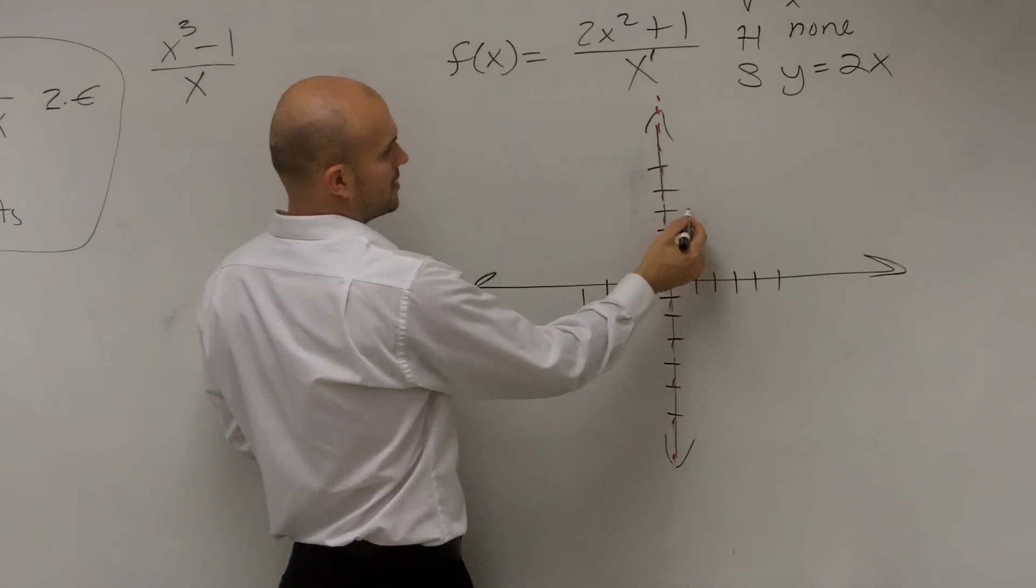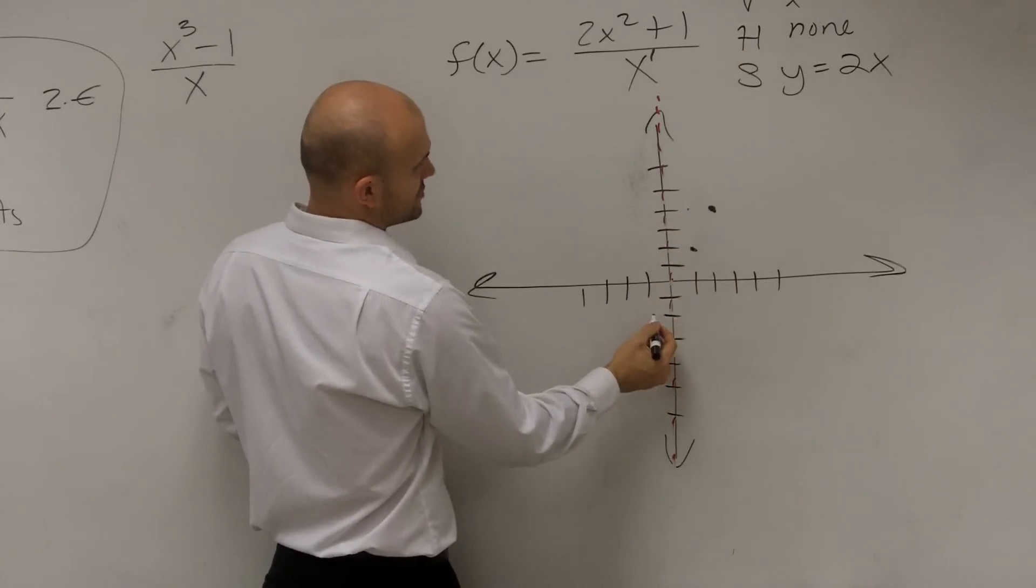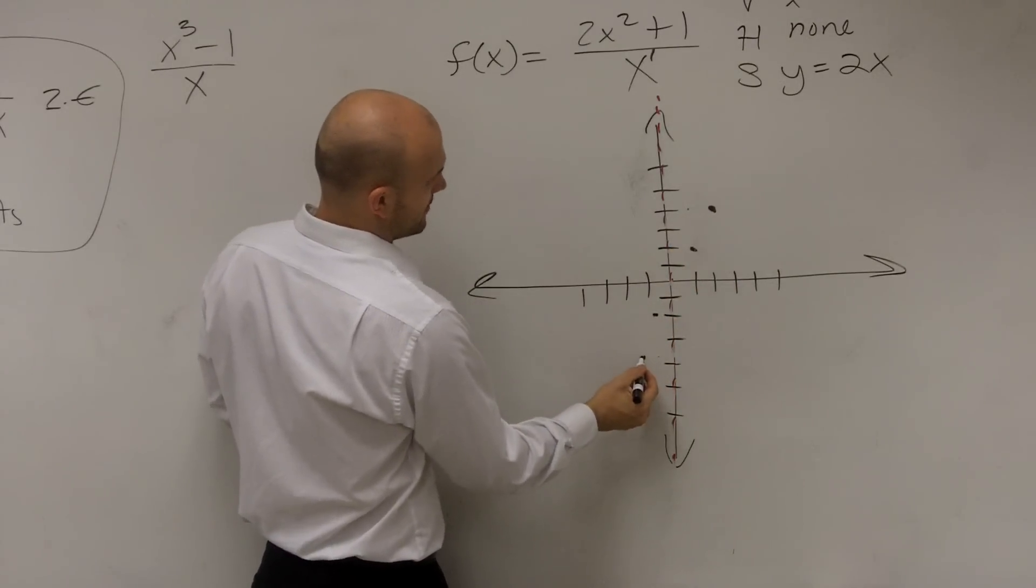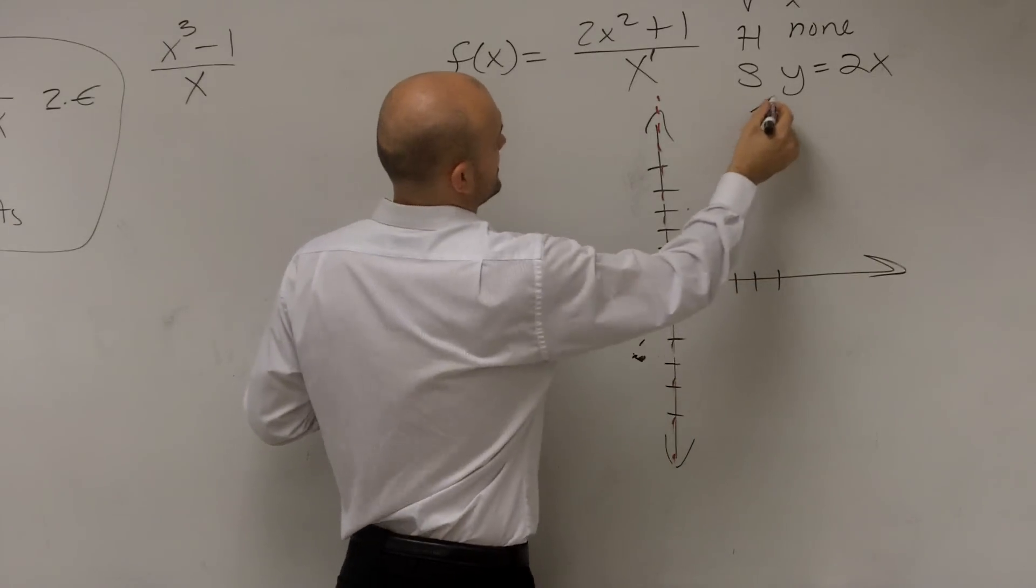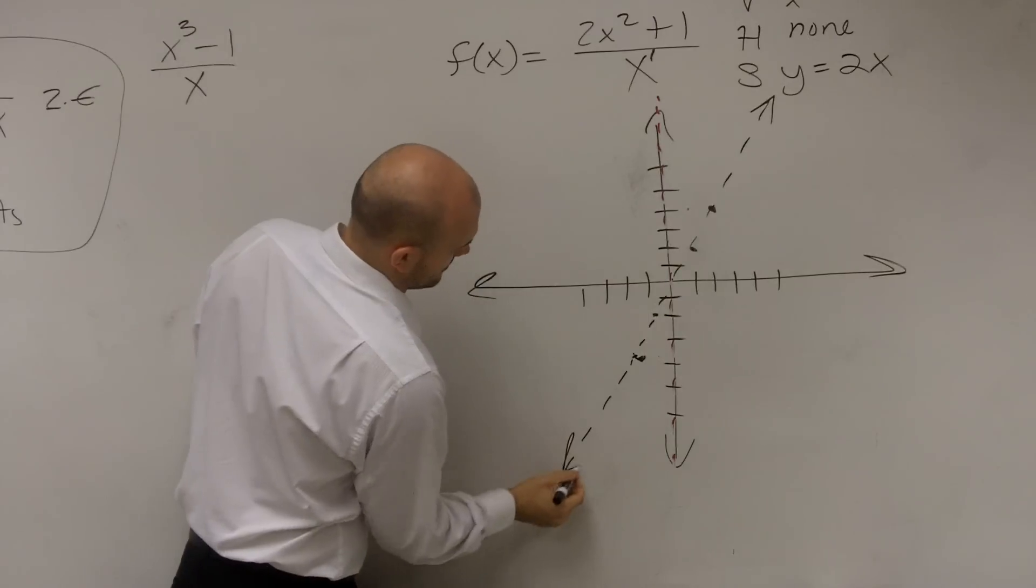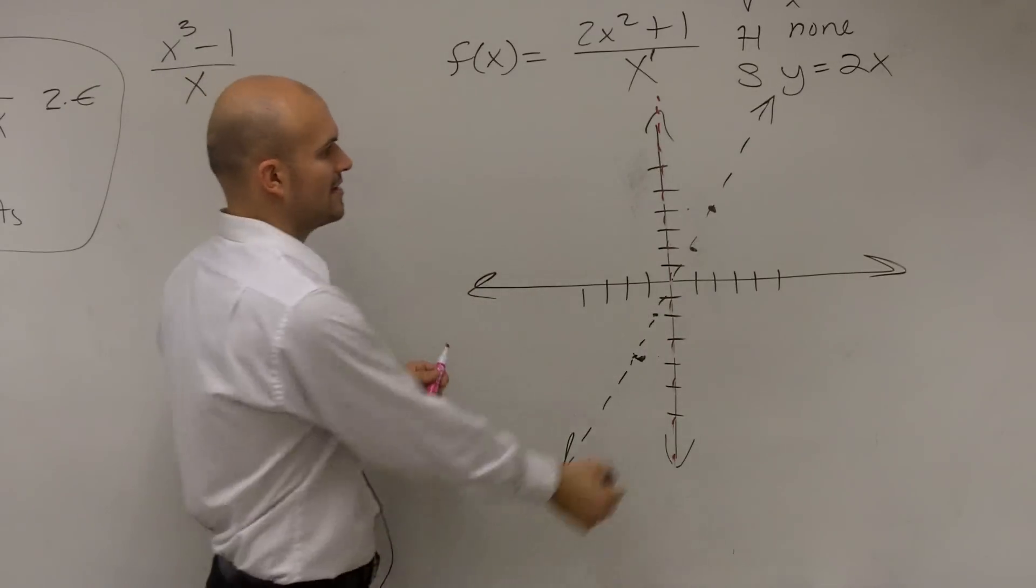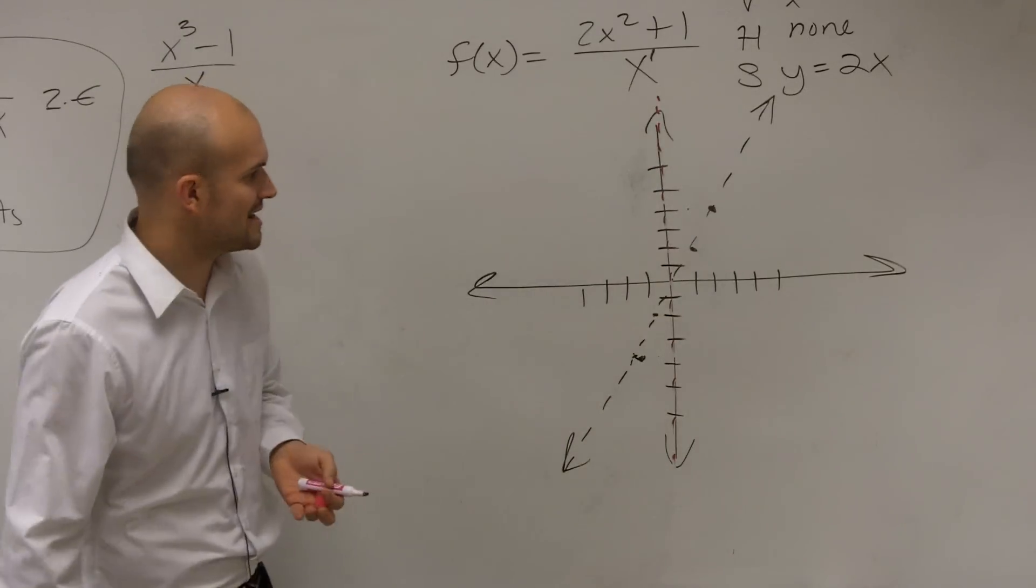Up 2 over 1, up 2 over 1. Down 2 over 1, down 2 over 1. So your slant asymptote looks something like that. Right? So we have a vertical and a horizontal.